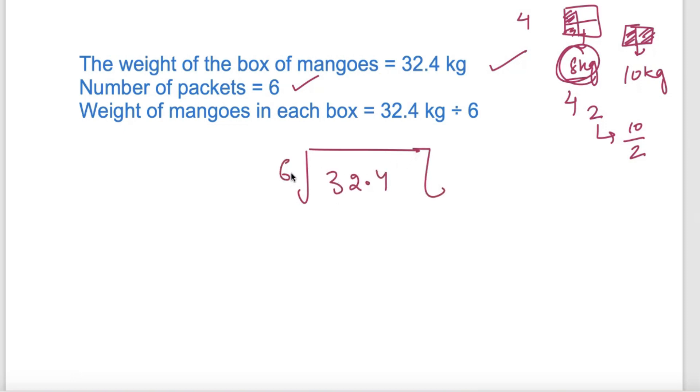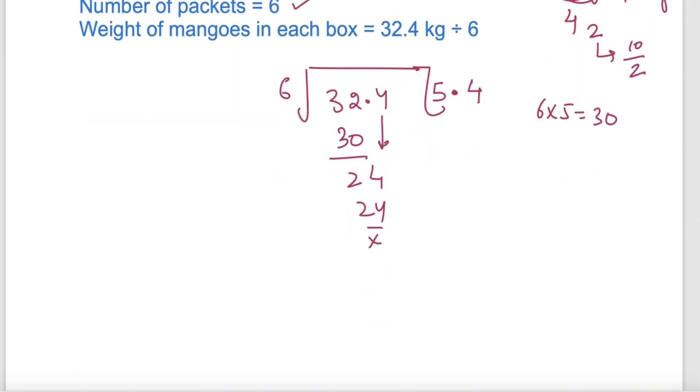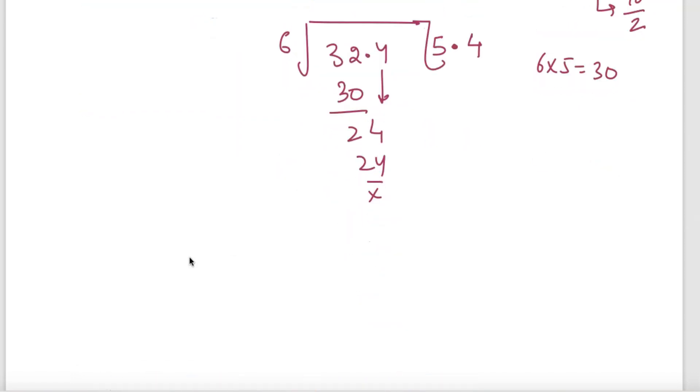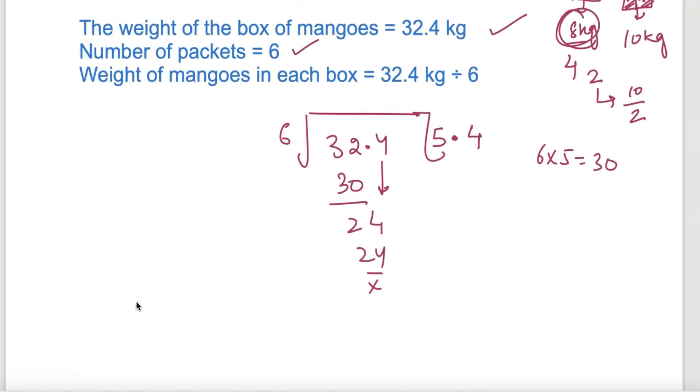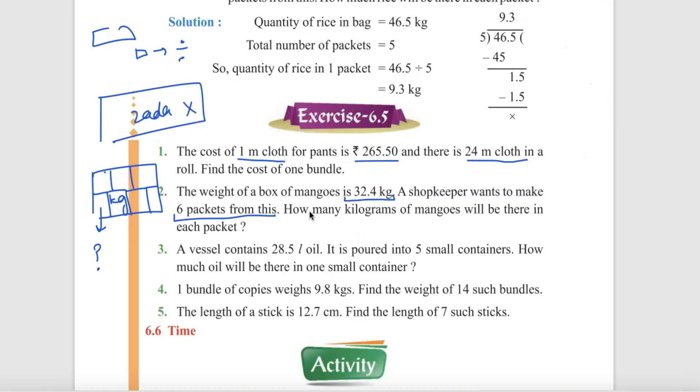32.4 divided by 6. 6 into 32 goes 5, 30, remainder 2. Bring down 4, 24 divided by 6 is 4. Now the decimal. 24 divided by 6 is 4. The answer will be 5.4 kg. Weight of mangoes in each box is equal to 5.4 kg.